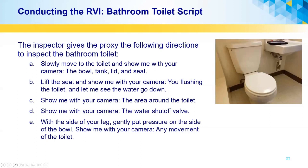Continuing with the bathroom: show me with your camera you operating the cold water faucet. Show me with your camera you turning on the hot water faucet and letting steam appear, or a thermometer reading of greater than 100 degrees Fahrenheit — you do not need a thermometer; the inspector will look for steam coming off the hot water. Turn off the hot water faucet and show me with your camera the area underneath the bathroom sink — the inspector is looking for leaking drain pipes and leaking water pipes. Now moving to the toilet: slowly move to the toilet and show me with your camera the bowl, tank, lid, and seat. Lift the seat and show me you flushing the toilet — it's recommended to put a piece of toilet paper in there so the inspector can see proper flushing. Show me with your camera the area around the toilet, the water shut off valve, and with the side of your leg gently put pressure on the side of the bowl and show me any movement of the toilet.